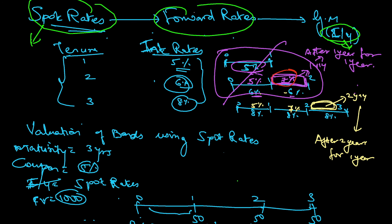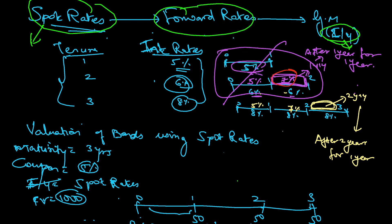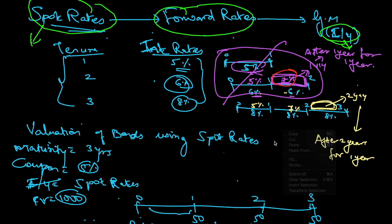So from the spot rate we got the forward rate, from the forward rate we got IY, and the bond valuation using IY matches the one done with spot rates. This shows how all these numbers are interconnected and extracted from one another — that's the key takeaway. Thank you for your time.